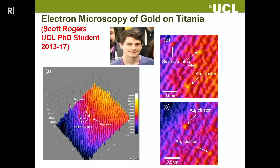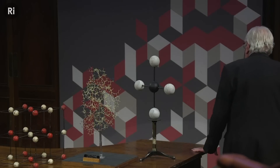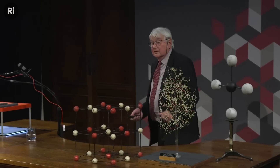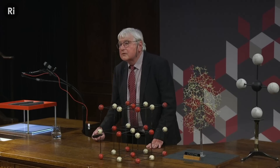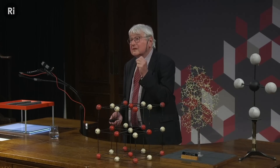Can we see atoms? This is work of a UCL student, Scott Rogers, working on a catalyst with gold on the surface of titanium dioxide. Using advanced electron microscopy to image those gold atoms on the surface, you will see single gold atoms — those bright yellow features — and also a gold cluster. We have imaged atoms using electron microscopy. This is a widely used technique now for well over 20 years, but it's got better and better, and we can image single atoms — a fantastic achievement. I think Bragg would have liked to have seen that, and I'm sure John Dalton would as well.